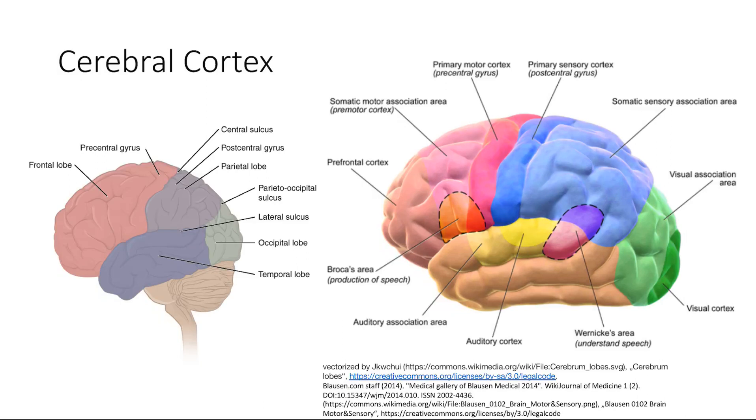The cerebral cortex has four lobes. First lobe is the frontal lobe, second lobe is the parietal lobe, third lobe is the temporal lobe, and finally the occipital lobe. This is the front and this is the back.